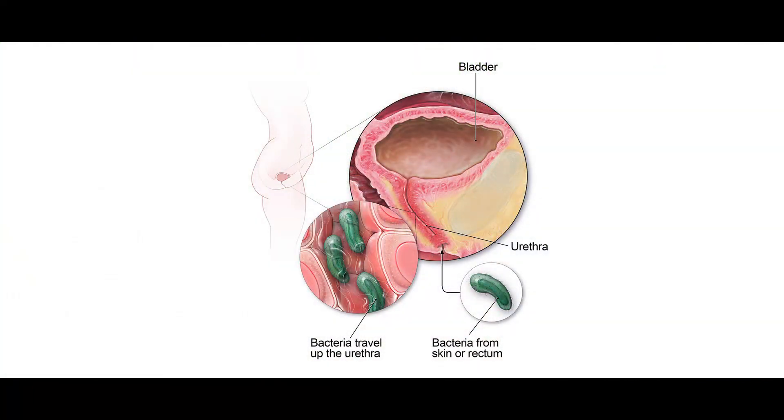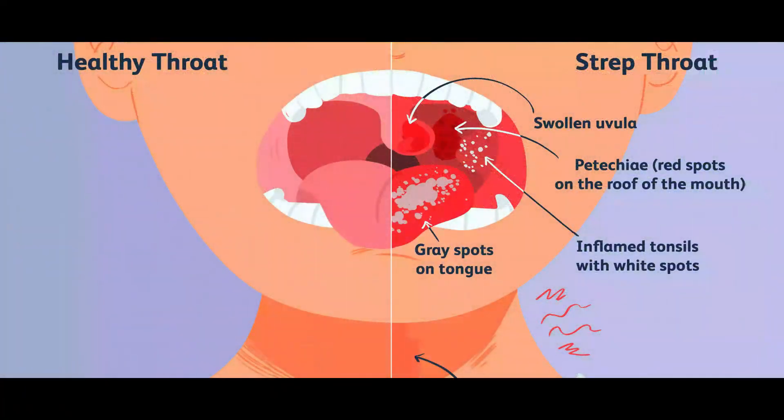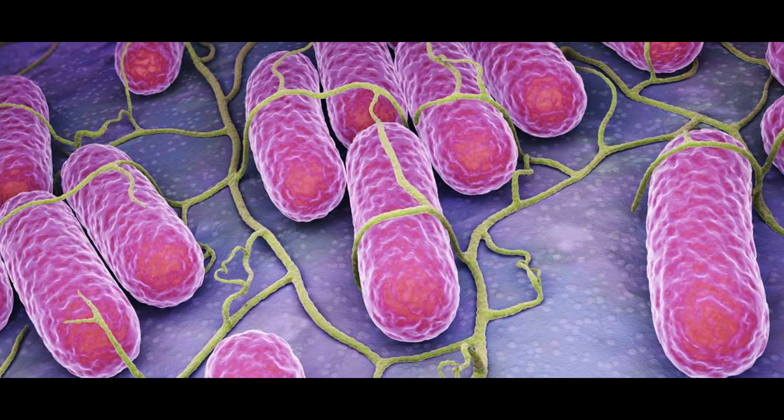Bacterial infections are more common. We will start with bacteria. Bacterial infections which are more common in skin include Staphylococcus on the top — this is a common bacteria which causes infections. There is also Streptococcus, which causes throat infections and pneumonia, known as Streptococcus pneumoniae. There is also Salmonella typhi, a common bacteria which causes typhoid. Then, Clostridium is a bacteria which produces food poisoning, gangrene, and tetanus. These are bacteria which infect humans.